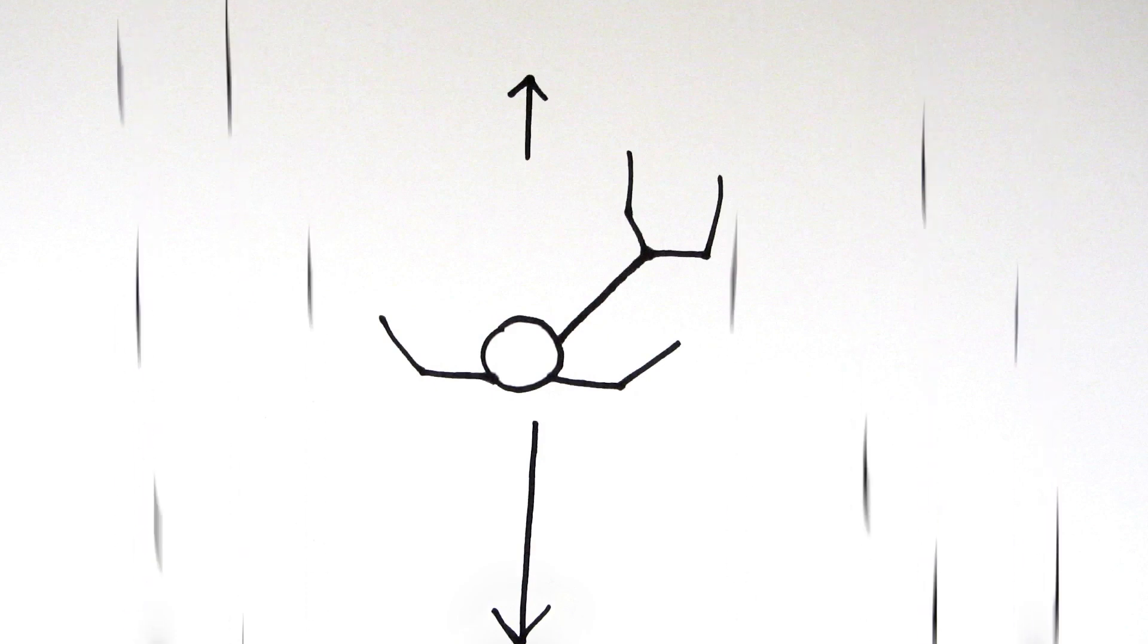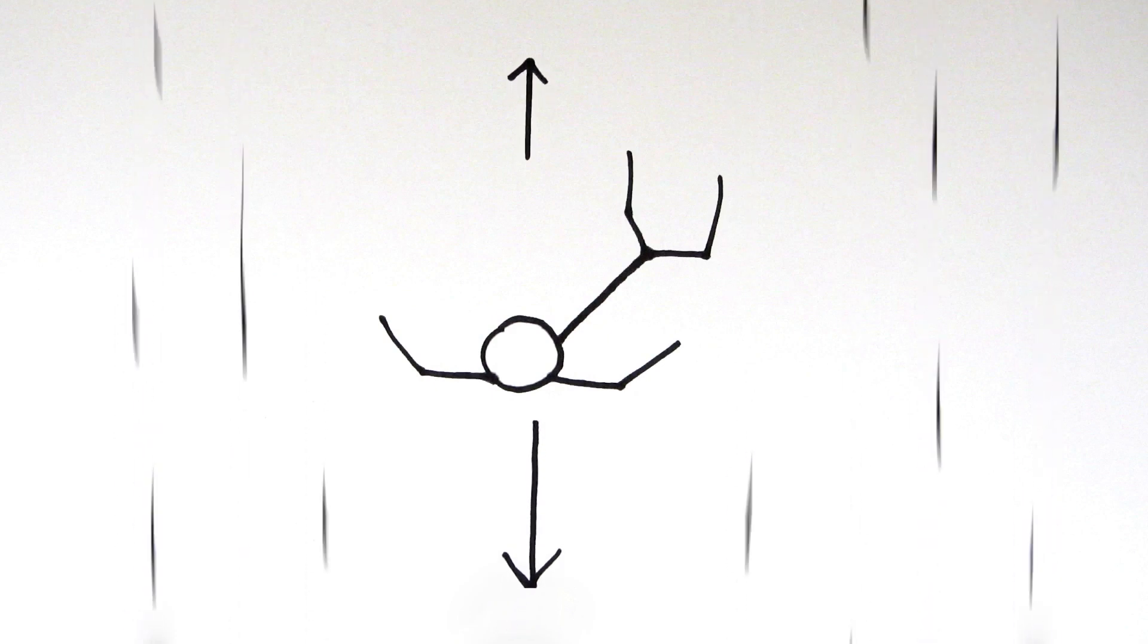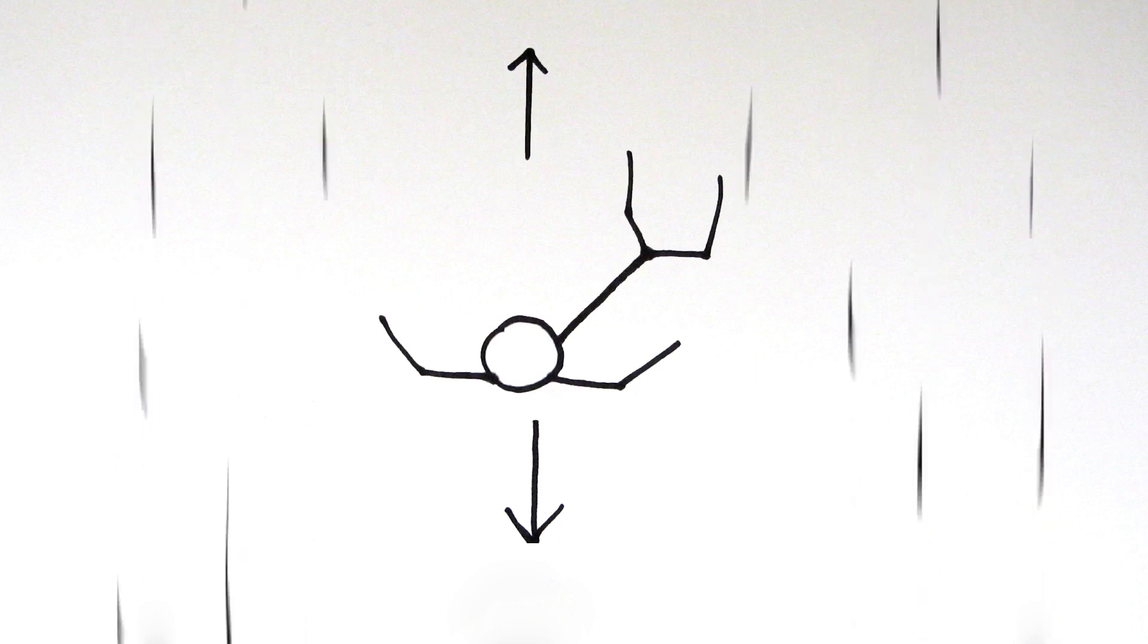He then reaches a point where his weight and air resistance balance out. This is called terminal velocity, and the resultant force is zero. But don't worry, he's not stationary, of course. He's just plummeting to the ground at a constant speed, that's all.